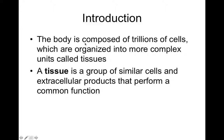In our bodies there are trillions of cells — it's estimated that the average human body has about 100 trillion cells. When these cells come together, they can form a tissue. Cells in a given location share a particular function, and we call this a tissue. Our body is made of lots of different tissue types.